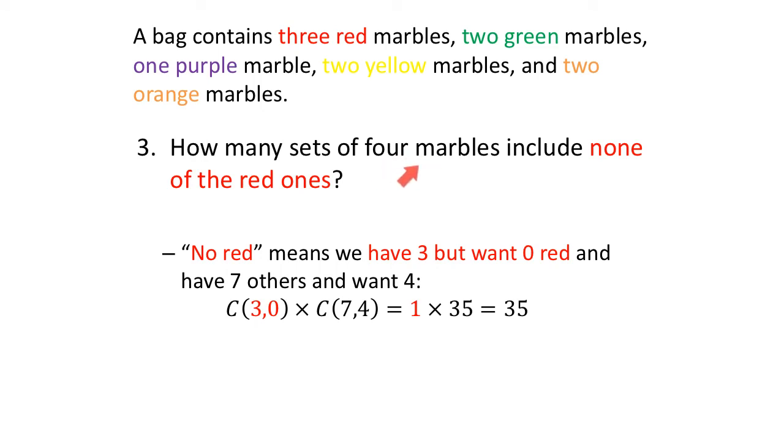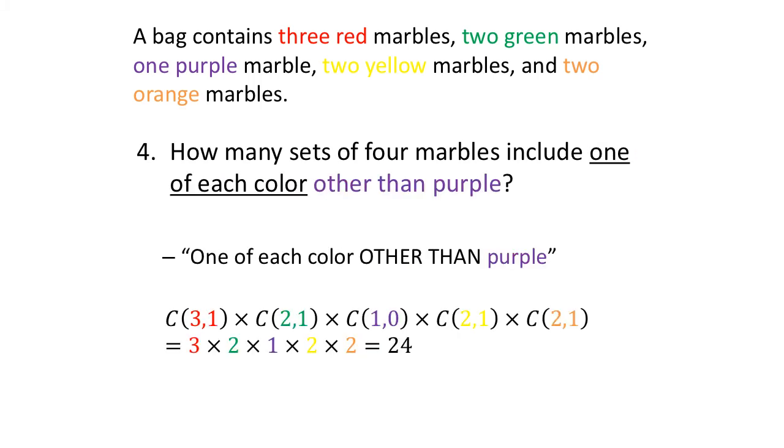A bag contains the same marbles that we had before. How many sets of 4 marbles include none of the red ones? No red means we have 3 red ones, but we want 0. 10 marbles in the bag, so we have 7 others that are not specifically marked out, red ones, and we want 4 of those. So out of the reds, the only thing that's being specified here, we have 3, we want 0. And then, so multiplied, we have 7 other marbles, and we want 4 of those, 4 that are not red. So that's 1 times 35, which is 35 different ways that we could have no red marbles when we draw 4 at random in a set.